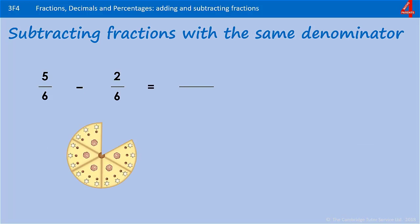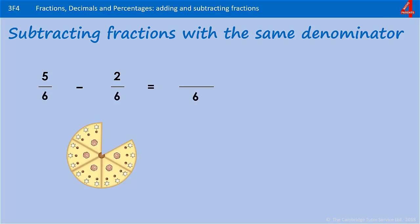Remember when you're adding fractions and the denominators are the same, the answer will have the same denominator. That's the same with subtraction, so our denominator in the answer will be in sixths. When we're adding fractions, we add the numerators together. When we're subtracting fractions, we take the second numerator away from the first one, so this will be 5 take away 2.